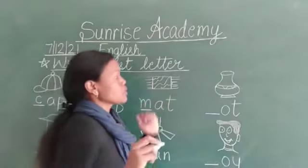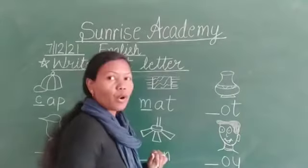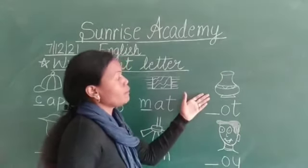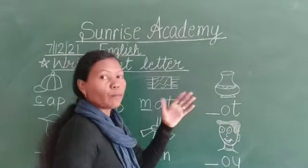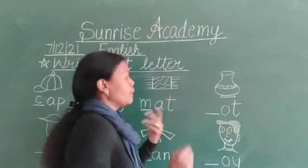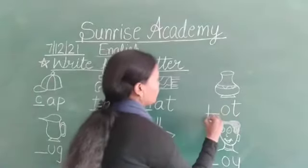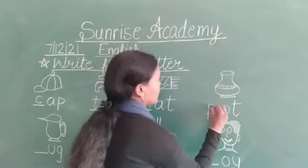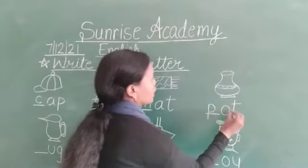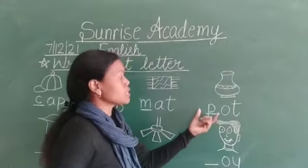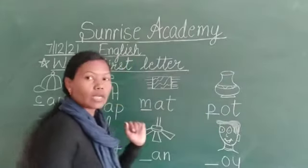Next picture is pot. Whose picture is it? Pot. So, 'pa' — what letter does 'pa' have? P. So, P, O, T — pot. The word is pot.